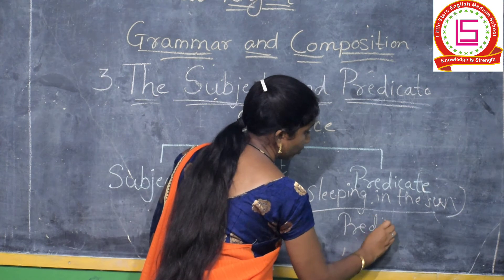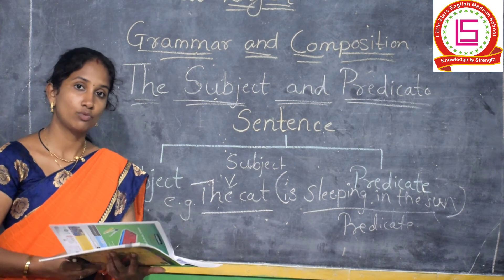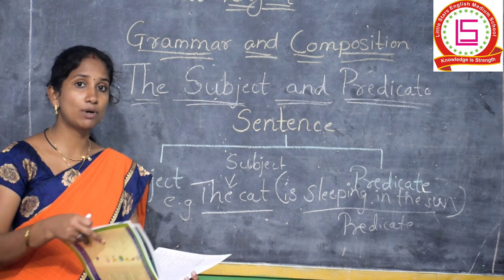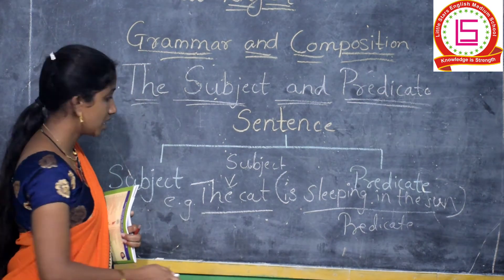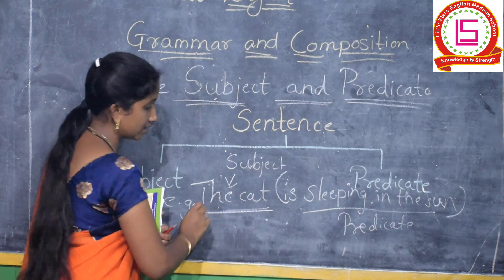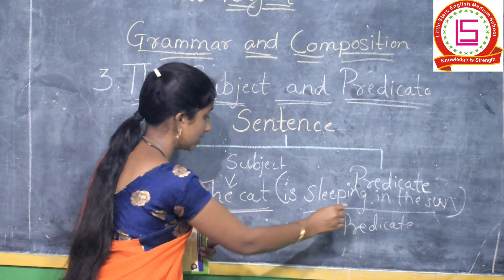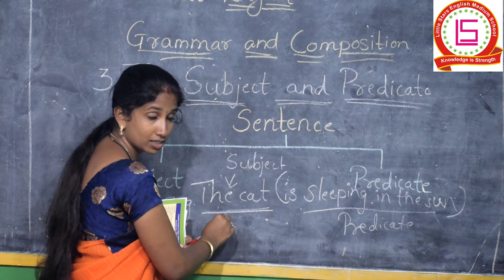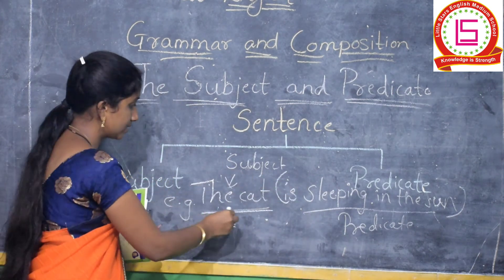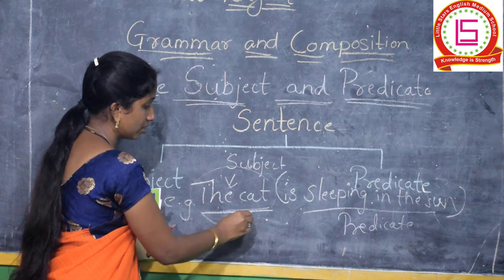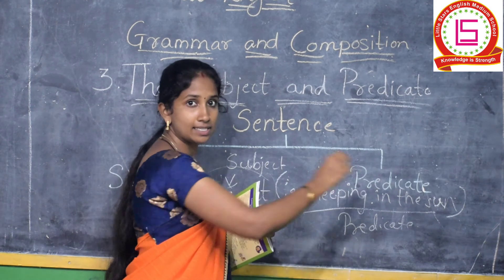So what is predicate? The rest of the sentence is your predicate. Predicate tells about the subject. Who is sleeping in the sun? The cat is sleeping in the sun. Here the predicate is telling about the subject. Predicate means something that tells about the subject. The cat is your subject, and the rest of the sentence is predicate.